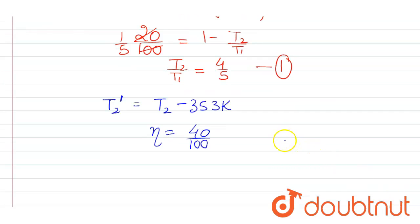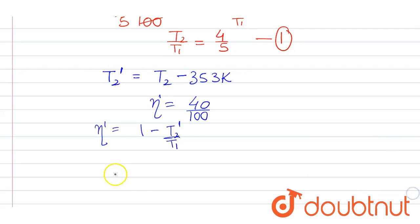While the temperature of the source will remain same. So now we again apply the formula of efficiency. Eta dash equals 1 minus T2 dash upon T1. Now putting the value here, 40 by 100 equals 1 minus T2 minus 353 upon T1.